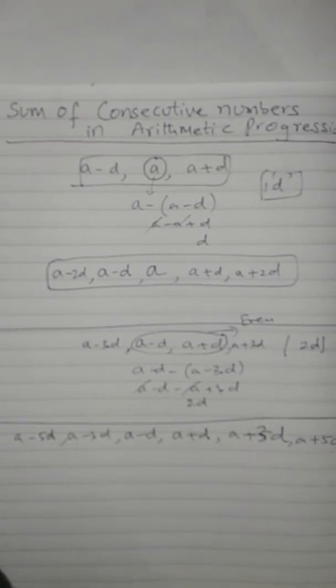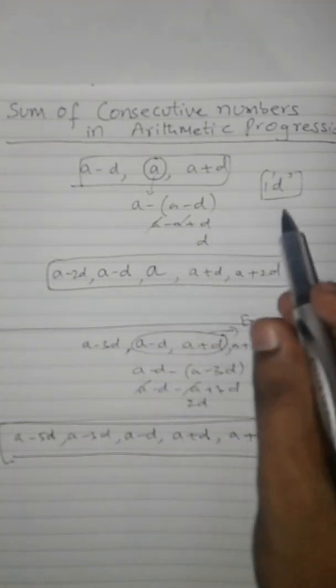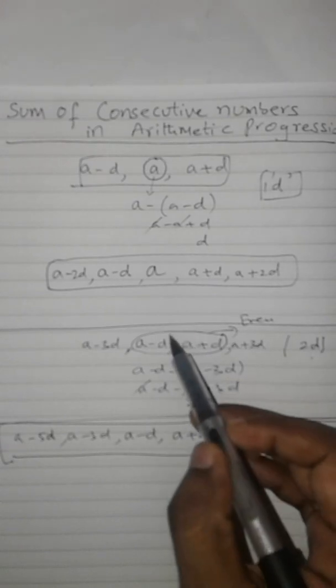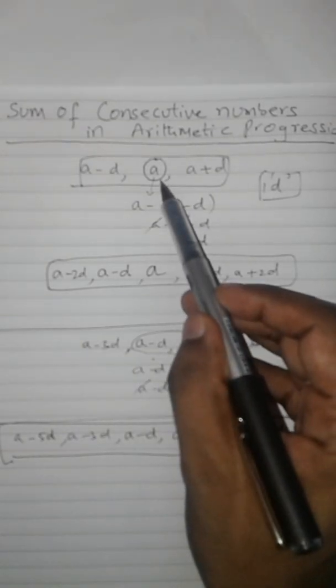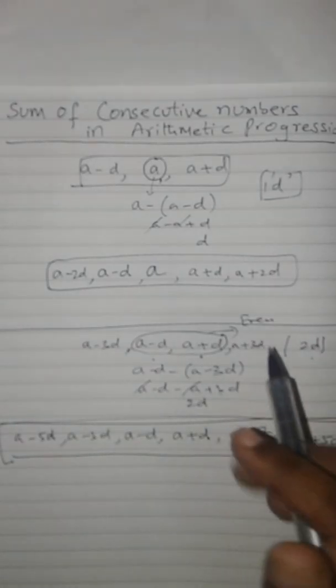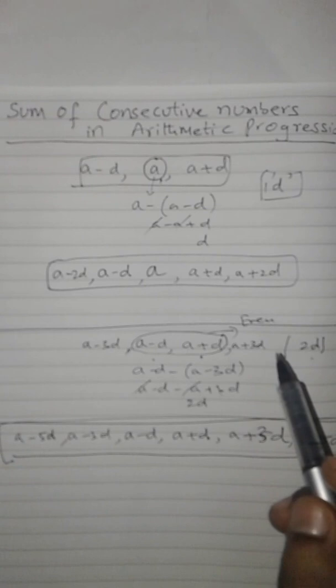So these are our even numbers. Remember, for odd it is 1d and for even it is 2d. In the middle it should be a minus d and a plus d for even numbers, and for odd it is a. Thank you for watching my video. Please subscribe and share your comments below.